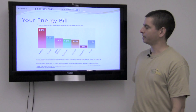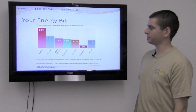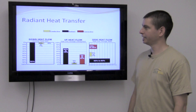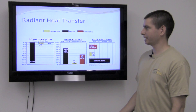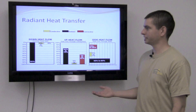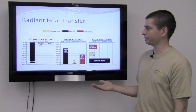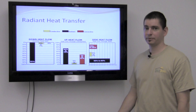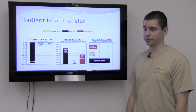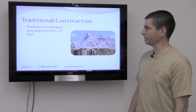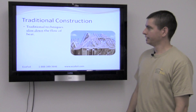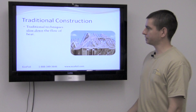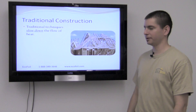So why is all this important? Studies have shown that heating and cooling are the two biggest expenses in your home's annual energy bill, and radiant heat flow accounts for the largest transfer of heat out of your home — either heat gained in the summertime or heat lost in the wintertime.